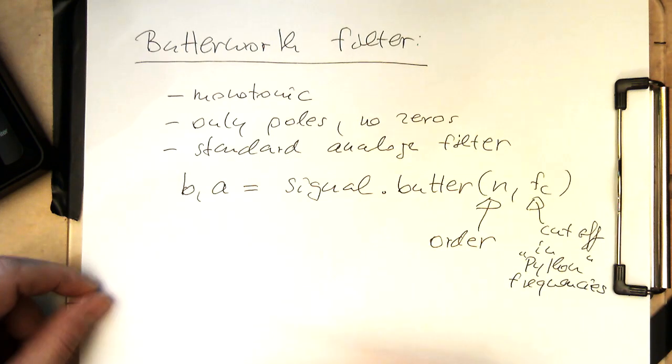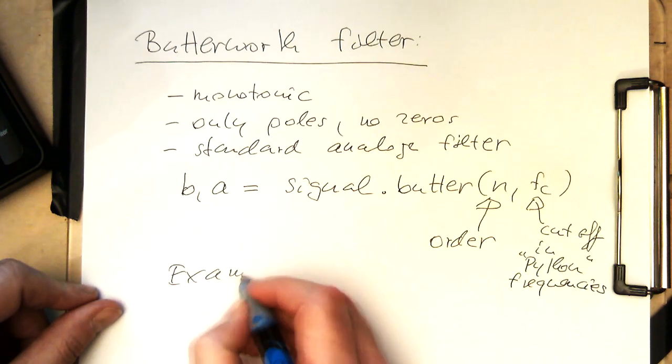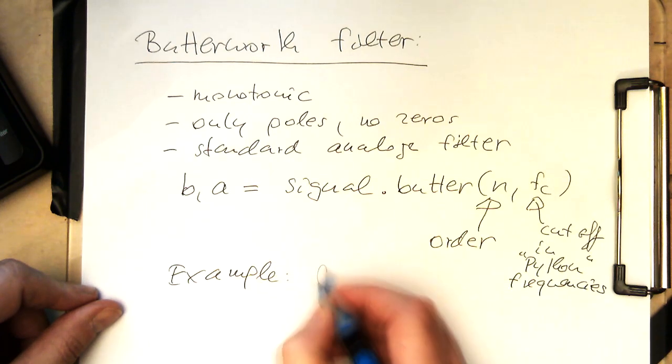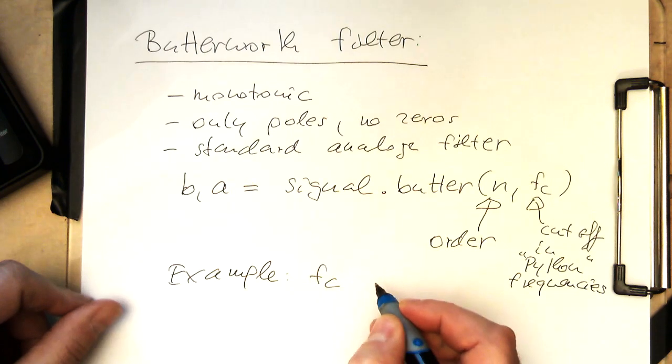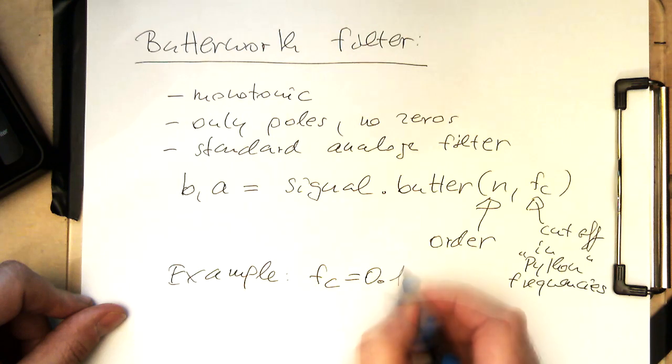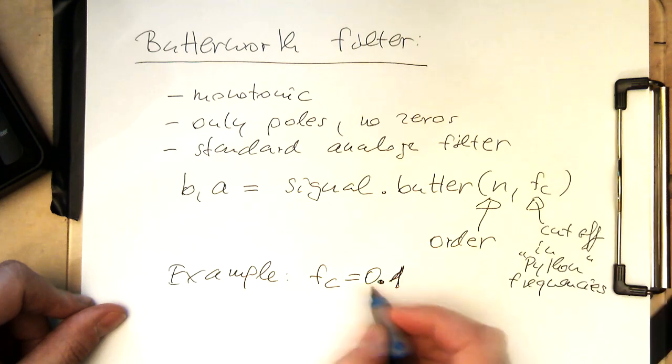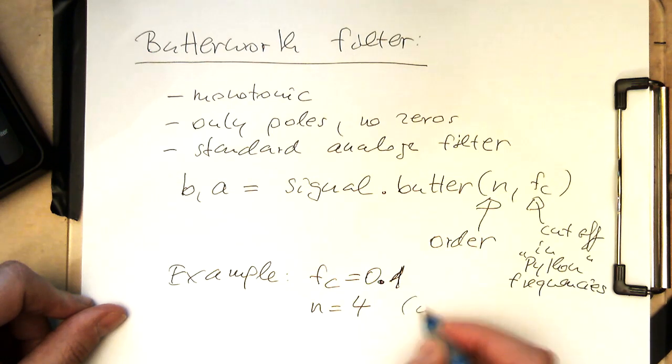And so as an example, let's say we've got fc equals 0.1. Let's call this here fc. Let's make sure this is here our standard normalized frequency, not to confuse this here, and the order is 4.